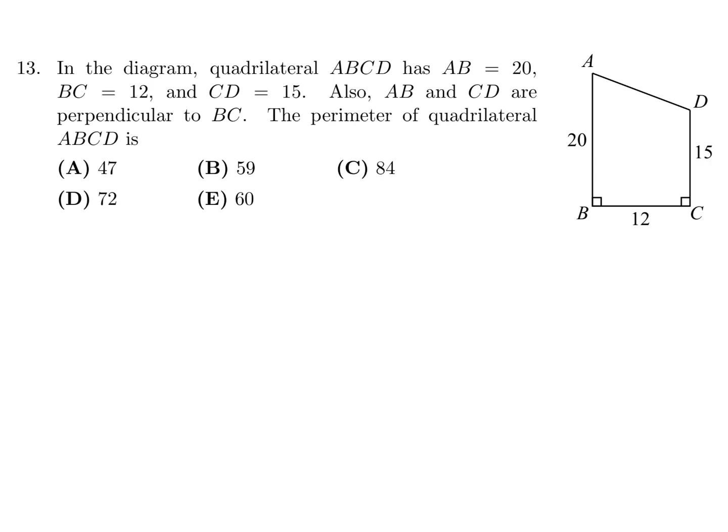In the diagram, quadrilateral ABCD has AB equal to 20, BC is 12, and CD is 15. Also, AB and CD are perpendicular to BC. The perimeter of quadrilateral ABCD is. Well, the perimeter so far is 20 plus 12 plus 15 plus X. So that's 32 plus 15, which is 47 plus X. So if I get the value for X, then I will be done with the question.